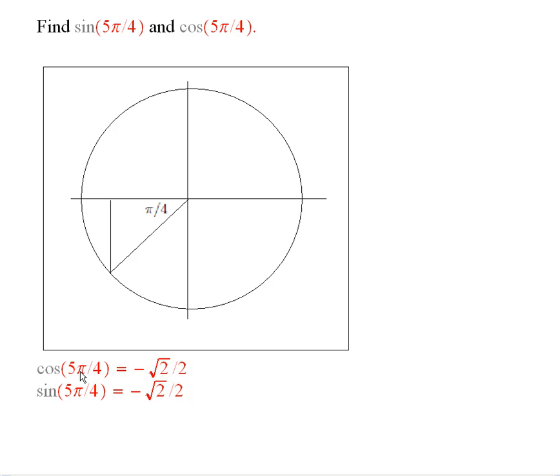Therefore, the cosine of 5 pi over 4 is negative square root of 2 over 2. And the sine of 5 pi over 4 is also negative square root of 2 over 2.